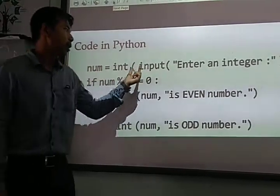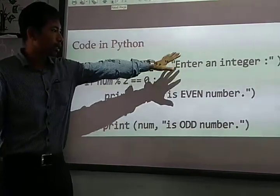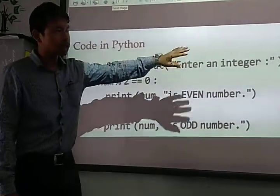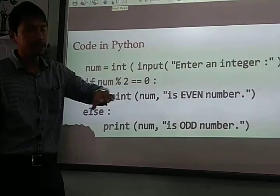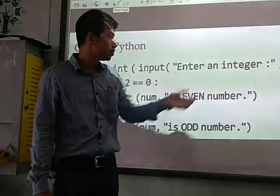So first one is num. Here the user will insert any integer or any floating number, anything he can insert. Floating numbers are excluded because they don't fall in the integer category. So enter an integer. Then next.